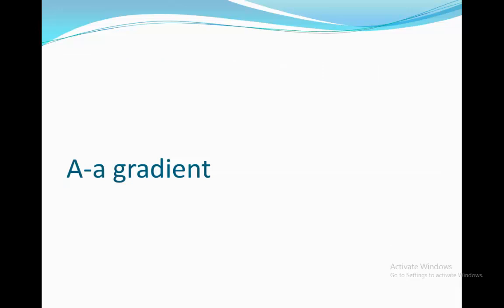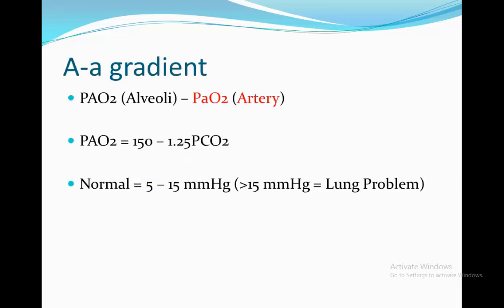Lastly, we have the AA gradient. We use this in hypoxic patients to determine whether the cause is pulmonary or extra-pulmonary. The capital A means alveoli and the small a is arterial. It measures the difference in concentration of oxygen in the alveoli and the artery, using the equation: partial pressure of oxygen in the alveoli minus the partial pressure of oxygen in the artery. Since we can't directly measure the oxygen concentration in the alveoli, we use the equation 150 minus 1.25 multiplied by the partial pressure of CO2, giving an estimation of alveolar oxygen. The normal AA gradient is between 5 to 15, and anything more than 15 means the hypoxia is due to a pulmonary disease.